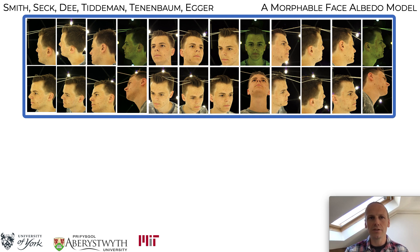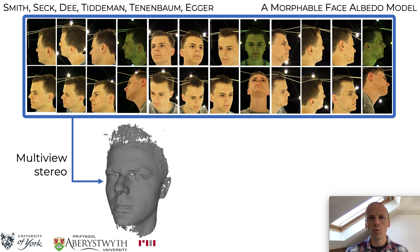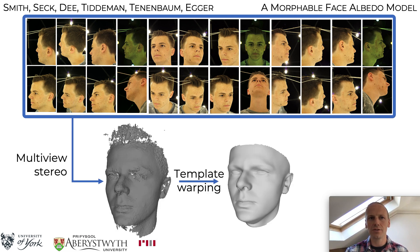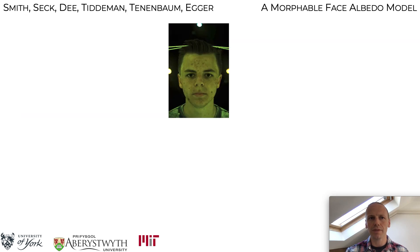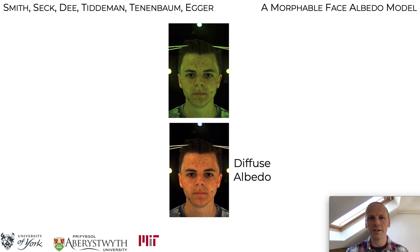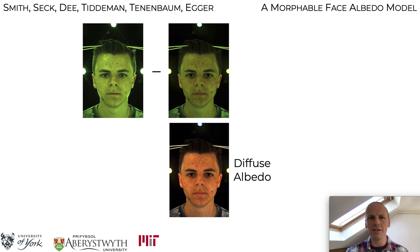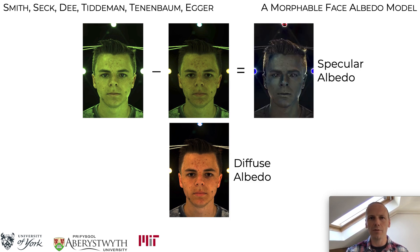In total this provides us with 24 views of the face. We use multi-view stereo to reconstruct an ear-to-ear model and then warp the morphable model template to the raw geometry. The raw cross-polarized image under uniform illumination directly provides the diffuse albedo. We use a calibrated color transformation to transform to linear sRGB space. Subtracting the cross from the parallel polarized image and again applying the color transformation gives the specular albedo map.